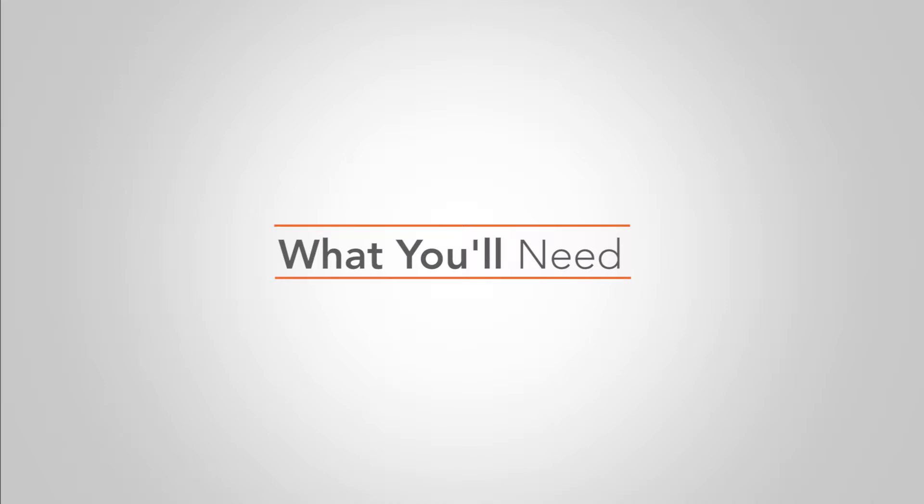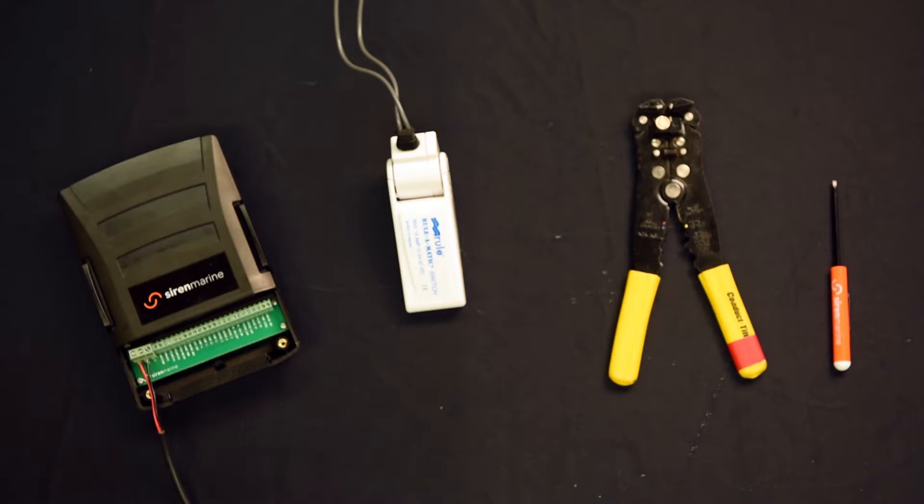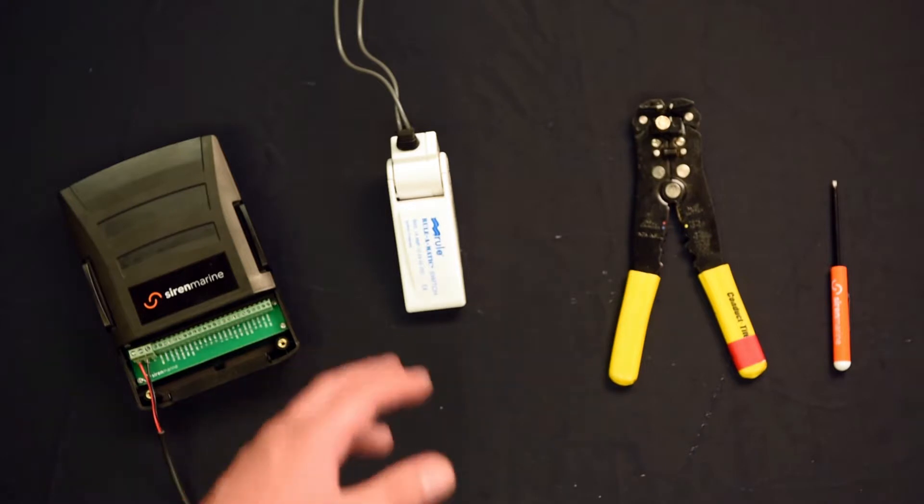Now when installing your high water alarm, we're usually tying into an existing high water alarm on the boat or a designated float switch that's only set aside for our Siren Marine unit. Here we'll be doing just that.